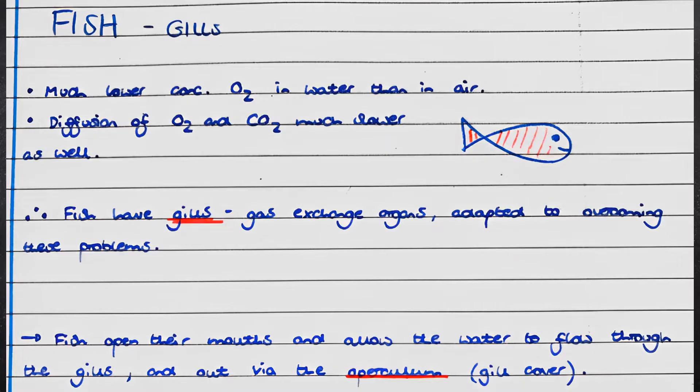Next we'll move on to how the gills of fish are adapted for efficient gas exchange. In an aquatic environment, an efficient gas exchange system is vital. This is because there is a much lower concentration of oxygen in water than in air, and the diffusion of oxygen and carbon dioxide is much slower as well. Therefore, fish have gills, which are gas exchange organs adapted to overcoming these problems. Fish open their mouths and allow water to flow through the gills and out via the operculum, which is the cover of the gills.